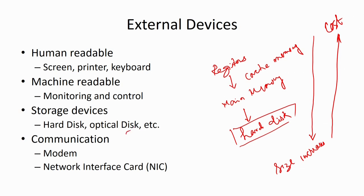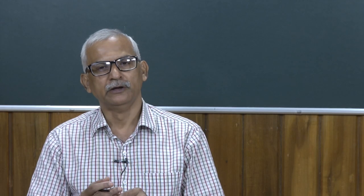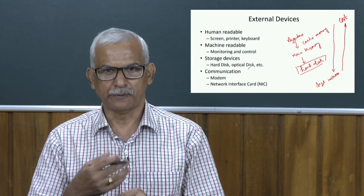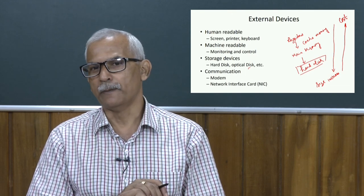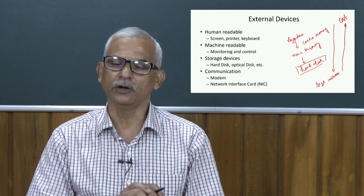We also have optical disks — for example, a CD can store a complete movie. When playing it, information is brought from the CD to main memory and the processor displays it. Additionally, we have communication devices such as a modem and a network interface card. We have a variety of external devices with different purposes, different transfer rates, and different data formats — and to handle all these issues we have the I/O module.